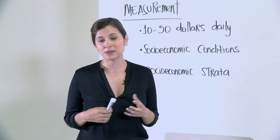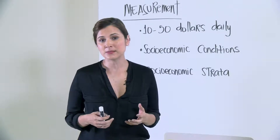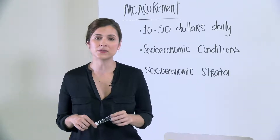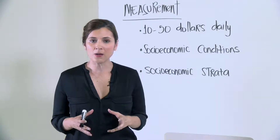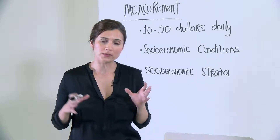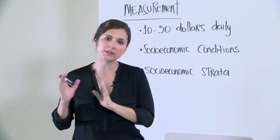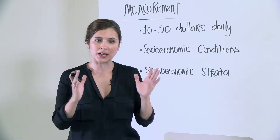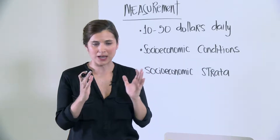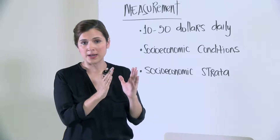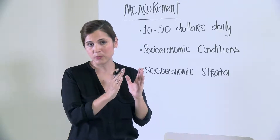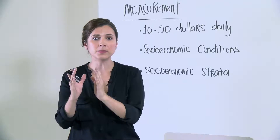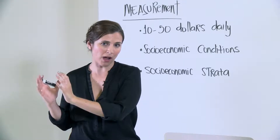Another way to measure and classify the middle class is something that is used in Colombia: a socio-economic strata system. In Colombia, houses are classified on a scale from 1 to 6, where 1 are the poorest and 6 are the richest. For the classification of the middle class, those numbers are collapsed: strata 1 to 2 are the poorest, 3 to 4 are the middle class, and 5 and 6 are the more affluent.